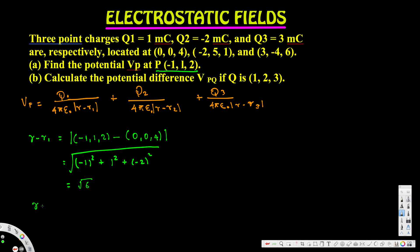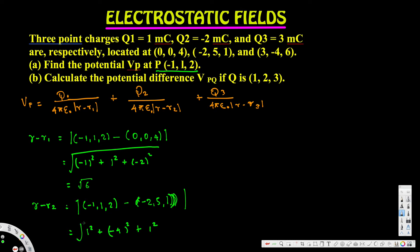For the second charge, |r - r2|: r = (-1, 1, 2) minus r2 = (-2, 5, 1). Subtracting: (-1-(-2))² + (1-5)² + (2-1)² = (1)² + (-4)² + (1)² = 1 + 16 + 1 = 18. So |r - r2| = √18.